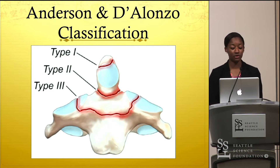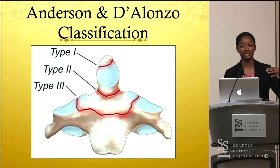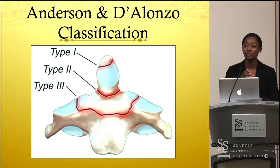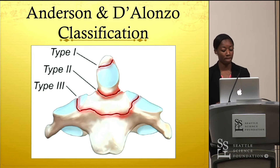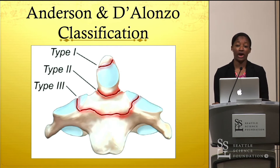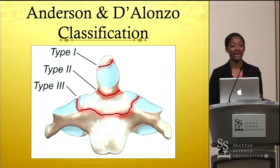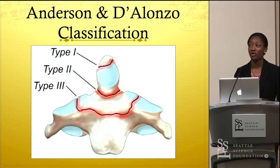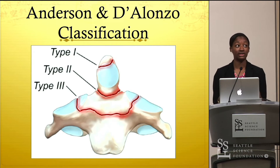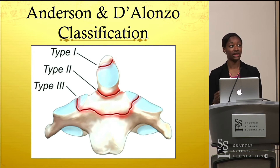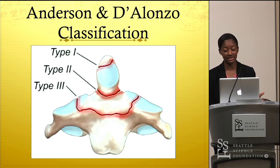Type 3 is a fracture that extends into the cancellous portion of the vertebral body. Traditionally, type 3 fractures have been considered stable, but more and more, as time progresses, there are cases arising where there's less stability.